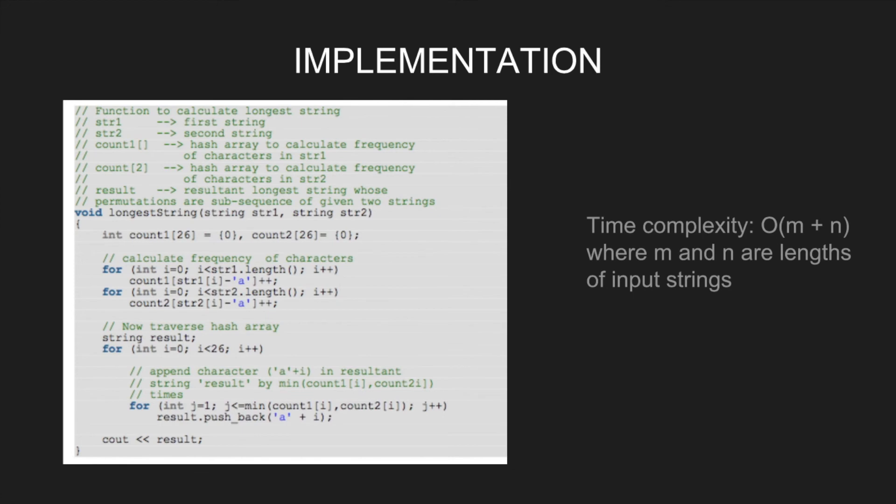This way, both the arrays are filled. Next, traverse the hash array and append character a plus i in resultant string result by minimum of count1, count2 times.